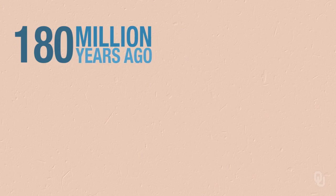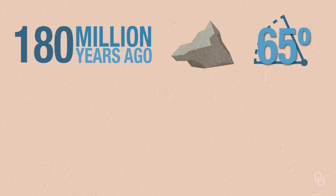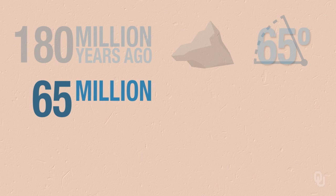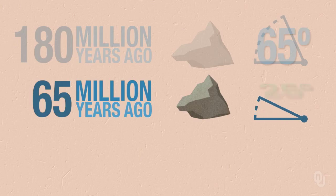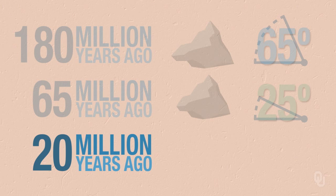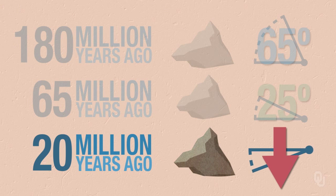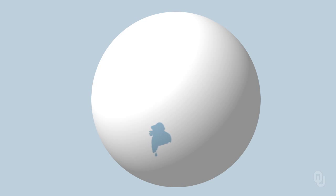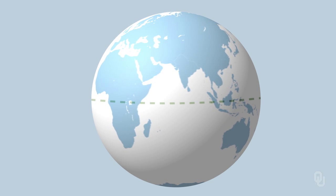One of the first continents scientists looked at was India. At about 180 million years ago, rocks that formed on India had a steep upward inclination of about 65 degrees. By 65 million years, the inclination had changed to 25 degrees up. By 20 million years, the inclination was down. So what actually happened to India? It moved from the south, crossed the equator, and then hit Asia and formed the Himalaya Mountains. Fossil magnetism — these changes in inclination — provided evidence that Wegener was right and the continents did move.